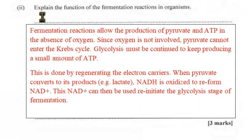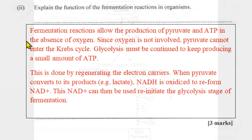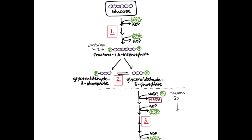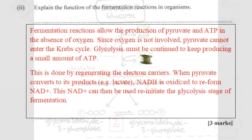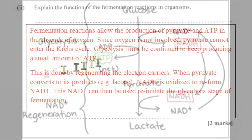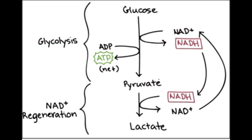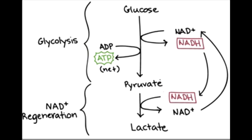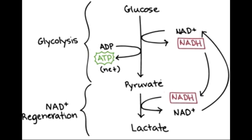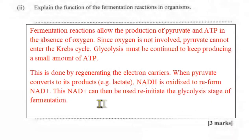For three marks, explain the function of fermentation reactions: fermentation allows the production of pyruvate and ATP in the absence of oxygen. Since oxygen is not involved, pyruvate cannot enter the Krebs cycle, so glycolysis must be continued to keep producing a small amount of ATP. This is done by regenerating electron carriers — when pyruvate converts to its products such as lactate, NADH is oxidized to reform NAD⁺, which can then re-initiate the glycolysis stage of fermentation.